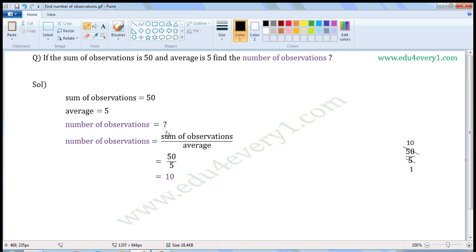We can find the number of observations using the formula: number of observations is equal to sum of observations divided by average.